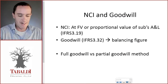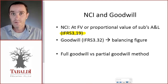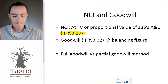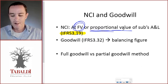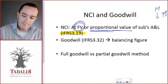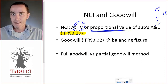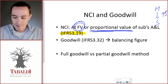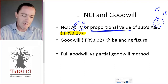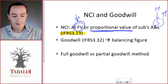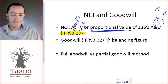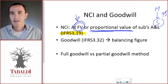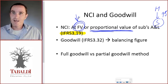IFRS 3 paragraph 19 states that we can choose whether we want to value non-controlling interest in the acquisition journal entry at fair value or the proportional value of the subsidiary's assets and liabilities. So if H buys a 75% share in S Limited, the non-controlling interest will be 25%. The proportional value will be the total assets and liabilities of the subsidiary times 25%. If we choose fair value, the question will have to give you the fair value of the NCI at acquisition date. Importantly, the company can choose at each acquisition — they are not bound by one method forever.